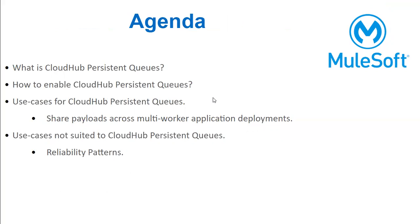So what is CloudHub Persistent Queues? This is a cloud service that allows messages published to the VMQ to be stored externally to the application. Wherever your application is deployed in the same region, you'll get a storage there. Messages will be stored and retrieved from that storage with the help of Amazon SQS service. This feature is directly tied to the CloudHub fabric service and is part of the CloudHub high availability infrastructure.